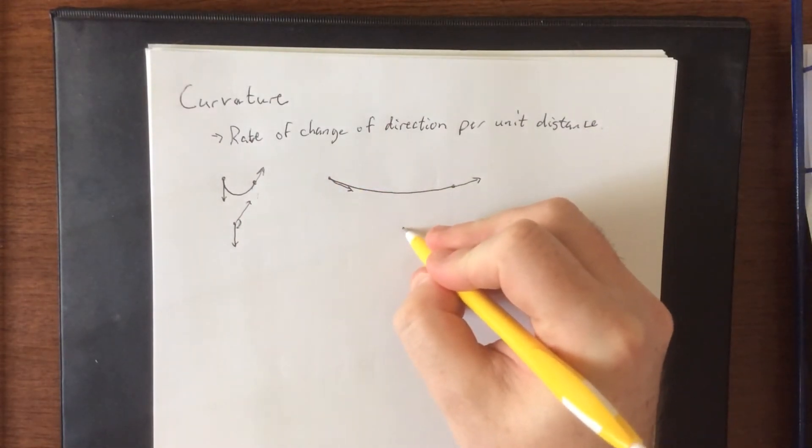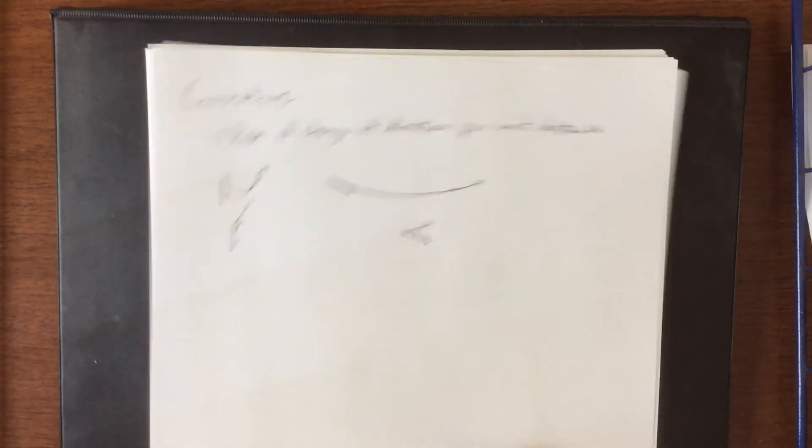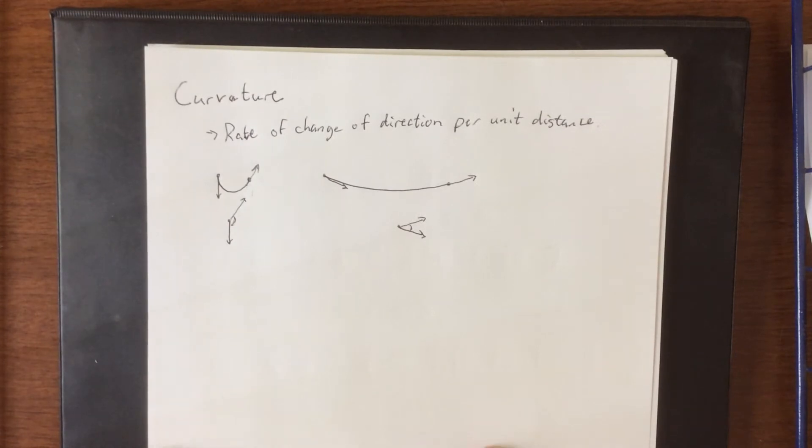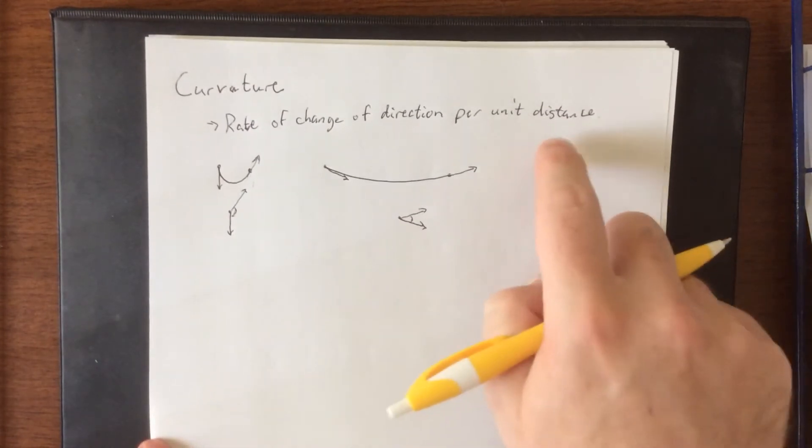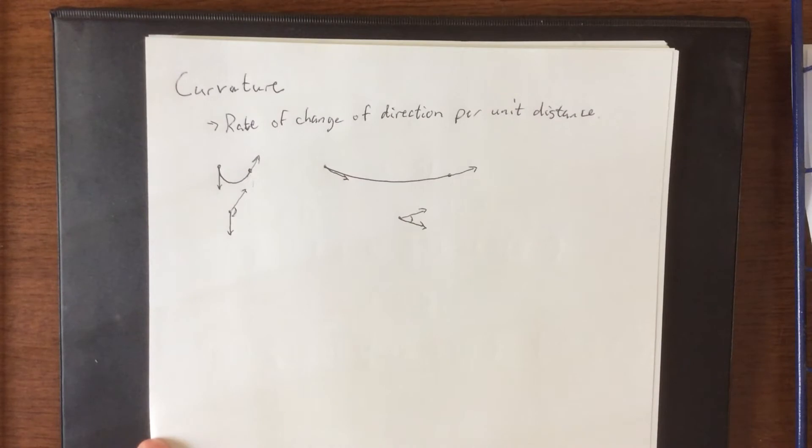Whereas these two, if we were to draw them with the same initial point, would look more like this, with only a slight change in direction between the two of them. Because of this, we now have a way of quantifying what this thing is.